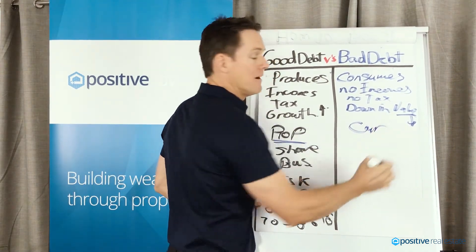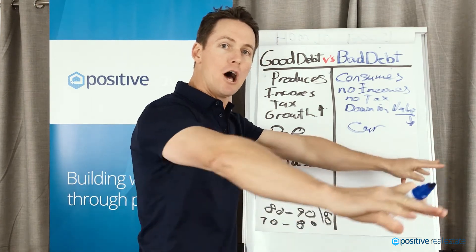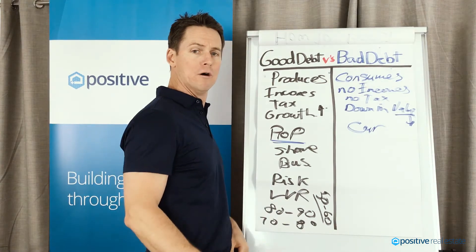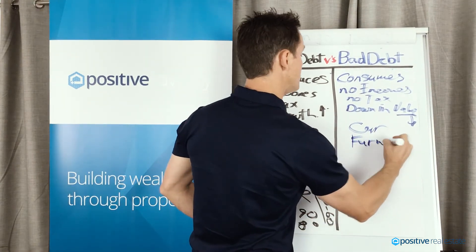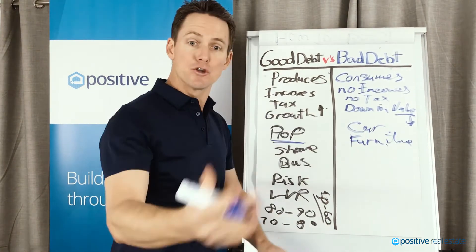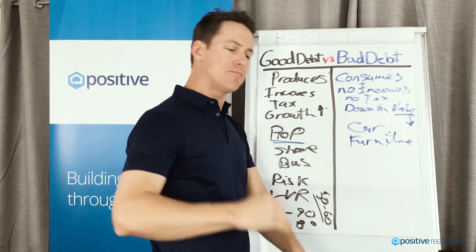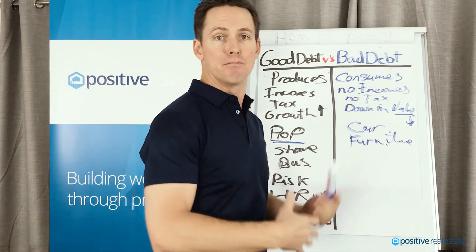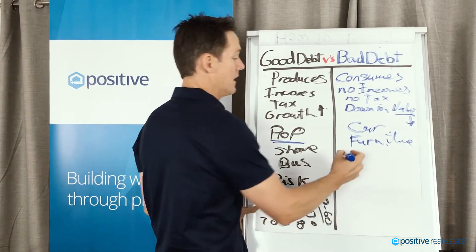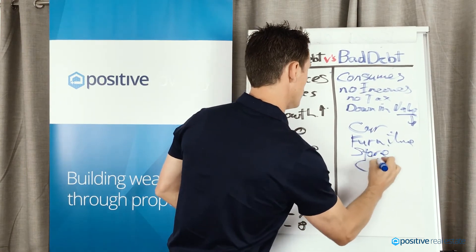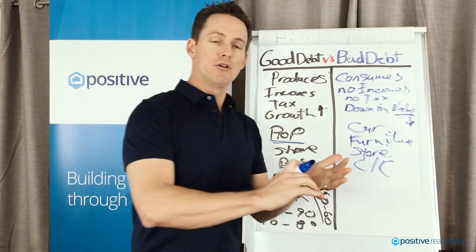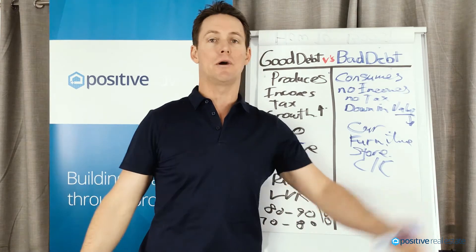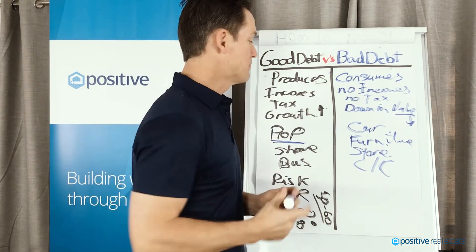Bad debt consumes us. It doesn't create an income and there's no tax deduction — it goes down in value. A brand-new car — the moment you drive it off the lot, you bought it for 60 grand and it's worth 40 grand. You couldn't sell it the next day for what you bought it for. Furniture — a lot of people put their furniture on a store card or credit card, and overnight the new lounge you bought is worth nothing. You couldn't sell it on Gumtree. Store cards and credit cards are no good. You put your lunch on your credit card for 10 bucks, and if you don't pay it off for three years, that actually costs you $200 because of the compounding interest.